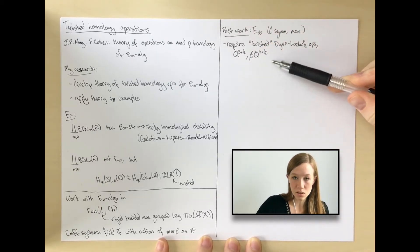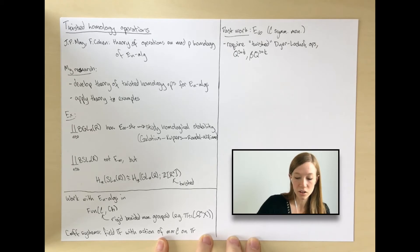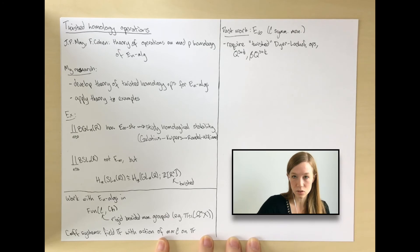I prove a bunch of properties that these satisfy, and I show that these twisted Dyer-Lashof operations together with the classical Dyer-Lashof operations generate all operations on homology of E-infinity algebras with these twisted coefficient systems.